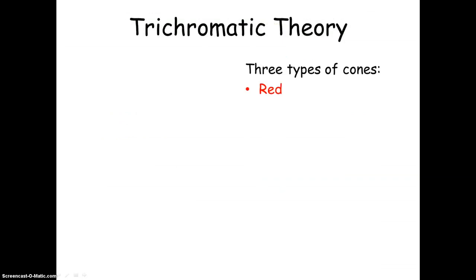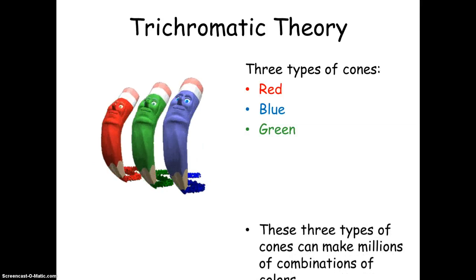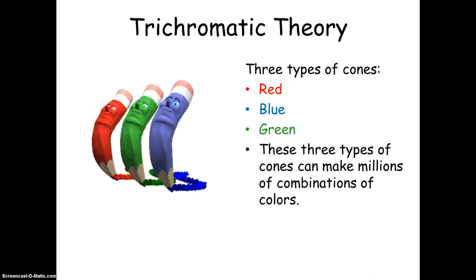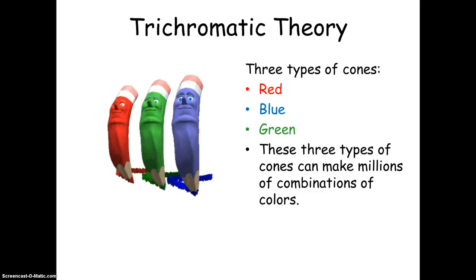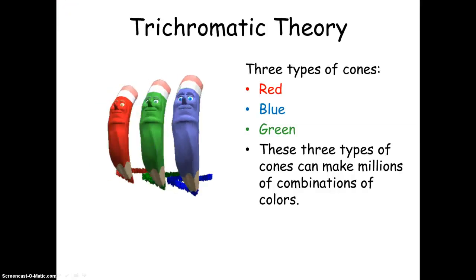The other theory you need to know is the trichromatic theory. So this theory states that there's three types of cones. Remember cones, color. Cones are what allows you to see color, and cones do their magic with a team of three. So they do their magic together. And if you put these three types of cones together, they are what can make the millions of combinations of color.